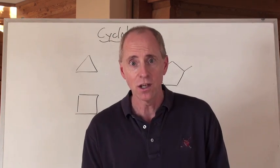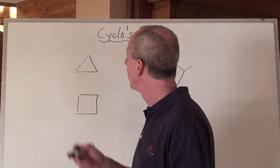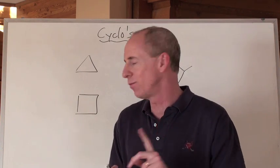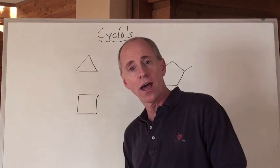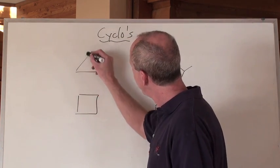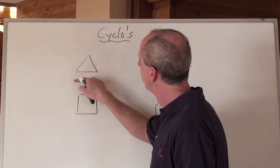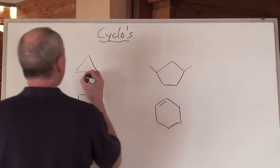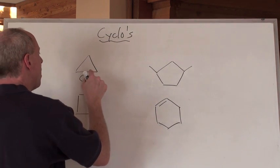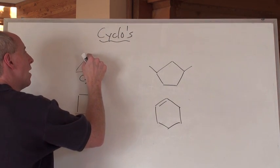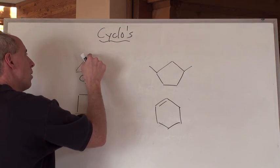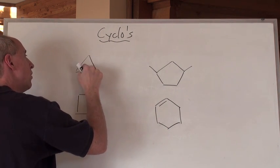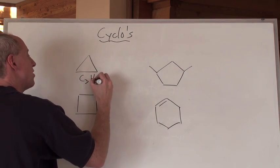The cycloalkanes are going to have a general formula that's the same as an alkene. This one — what would you call that? If it's all carbons connected in a triangle, one carbon, another carbon, and another carbon — that's C3. Every point has a bond to another carbon, so that leaves two hydrogens you can bond on there, two here and two here. That's C3H6.